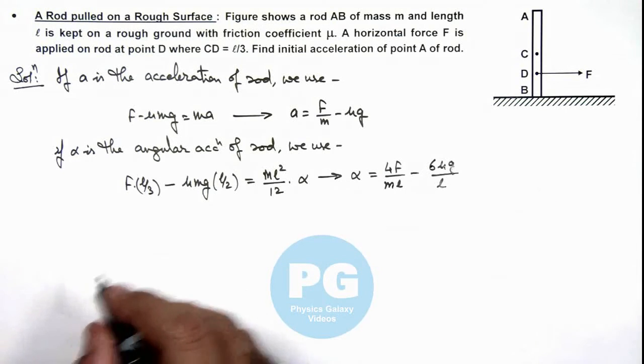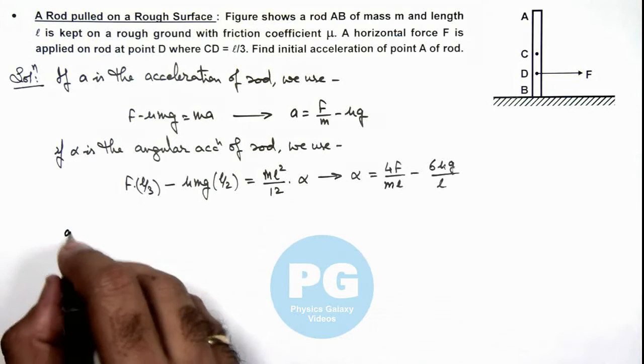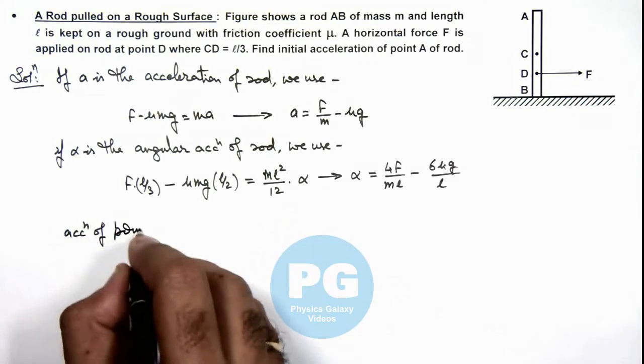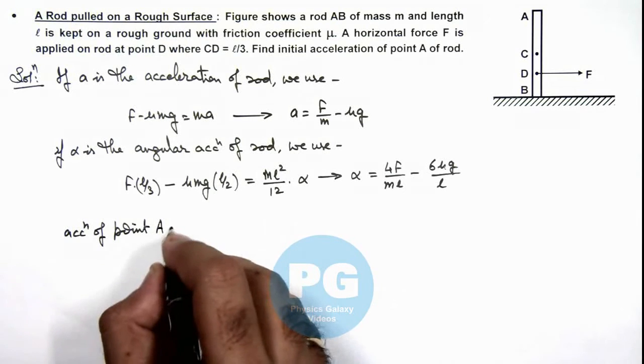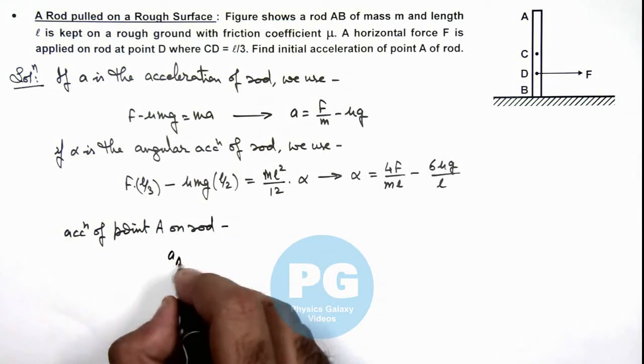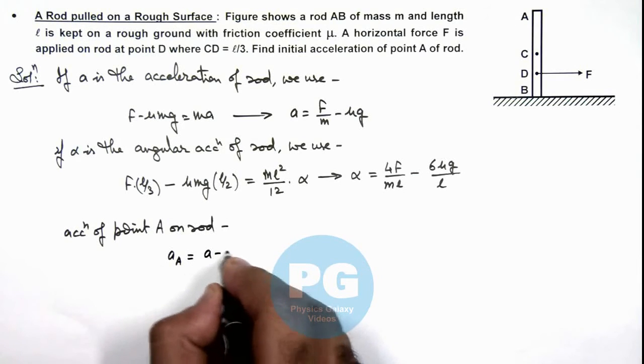Now in this situation if we calculate the acceleration of point A on rod, then this can be given as a minus l by 2 α.